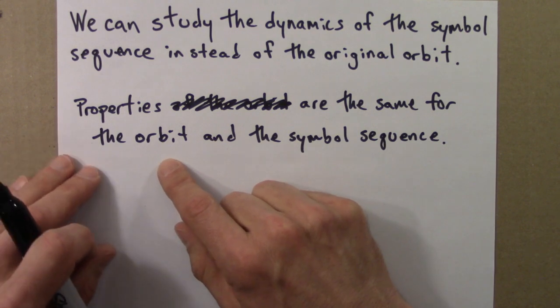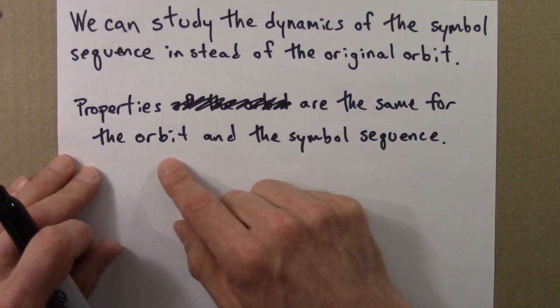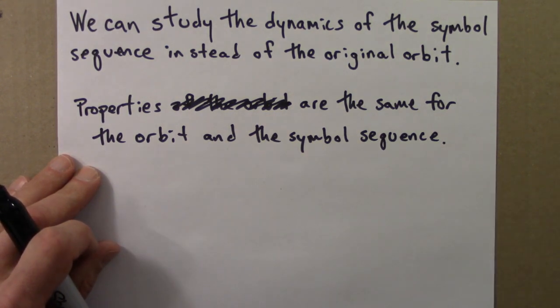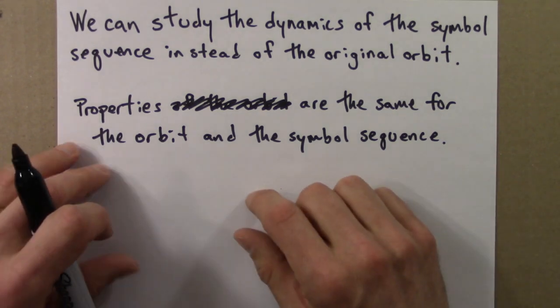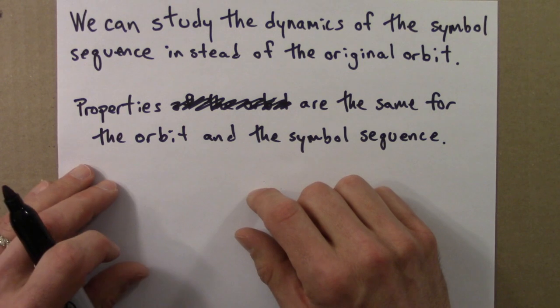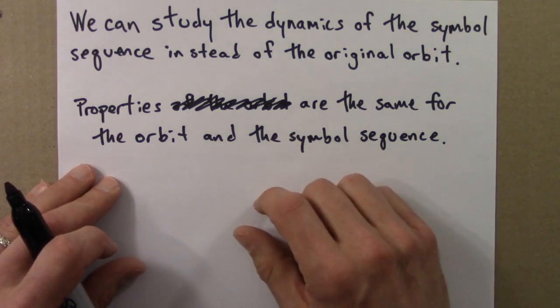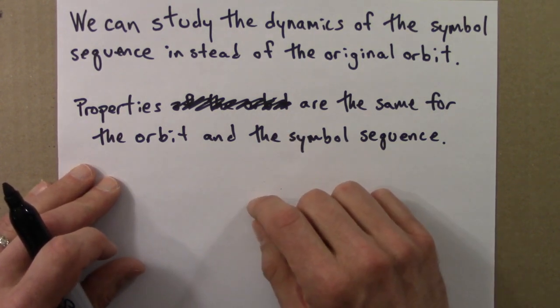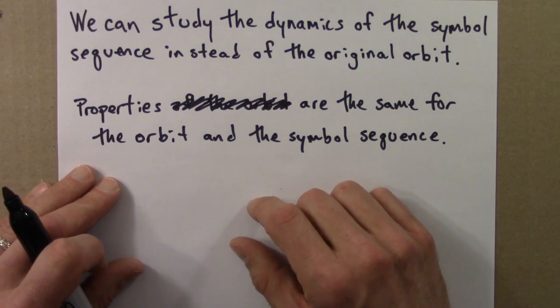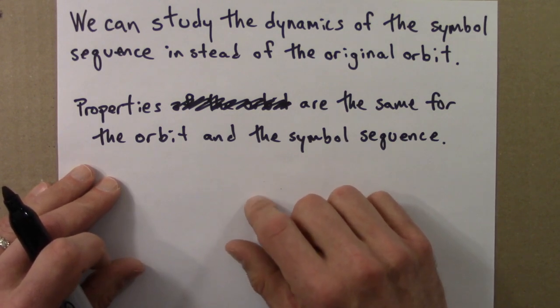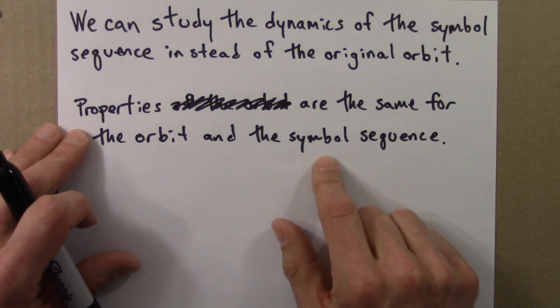Now, this isn't an obvious statement at all, because it seems like by going to symbols, I'm throwing out a lot of information. After all, any number that was between 0 and a half, I decided to just turn into L. That's a very coarse thing to do. There are lots and lots of numbers, an infinite number of numbers between 0 and a half, and I just turned all of those into L. So it seems as if I'm losing information, so how can these two things be the same?